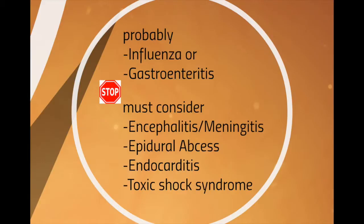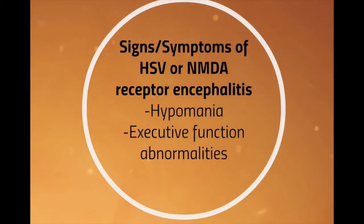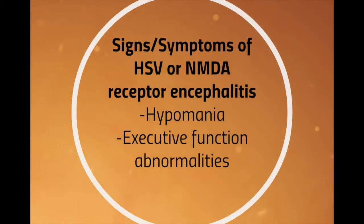Consider early encephalitis — the two types we see often in this age group would be HSV and NMDA receptor antagonist encephalitis. They have very odd presentations in addition to fever. NMDA receptor antagonist encephalitis usually presents with word-finding difficulty, vulnerability, confusion, and really interesting executive function loss. HSV encephalitis classically presents with hypomania.